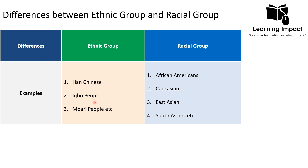The Igbo people are an ethnic group native to Nigeria whose language is Igbo, and they have a rich culture. The Maori people are the indigenous people of New Zealand. These are all ethnic groups defined by shared language and traditions. Indigenous peoples of different countries generally form separate ethnic groups because they share common culture, language, and traditions.